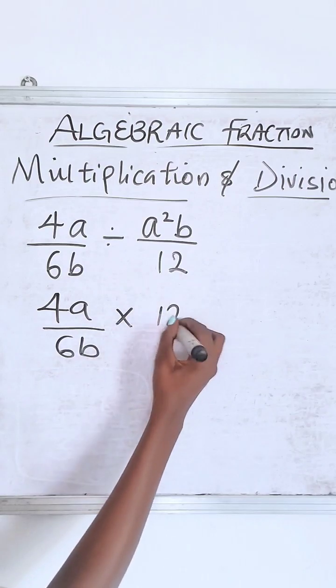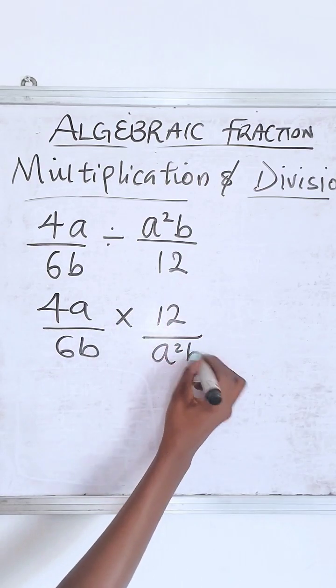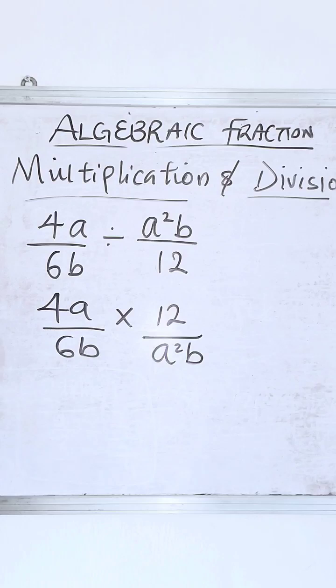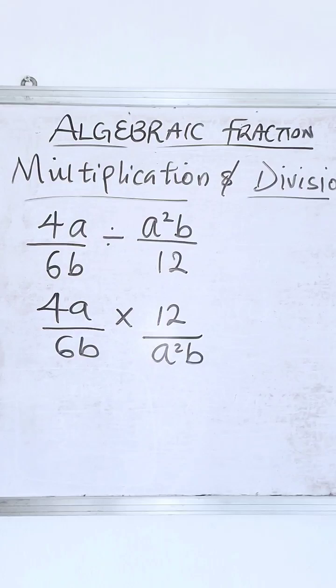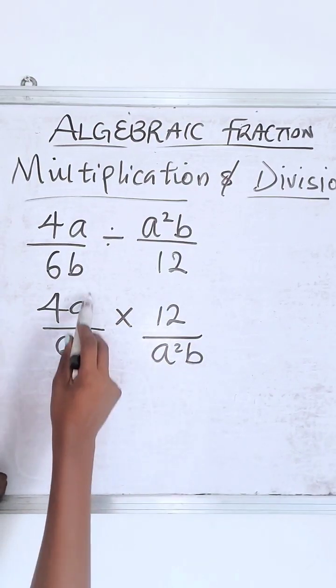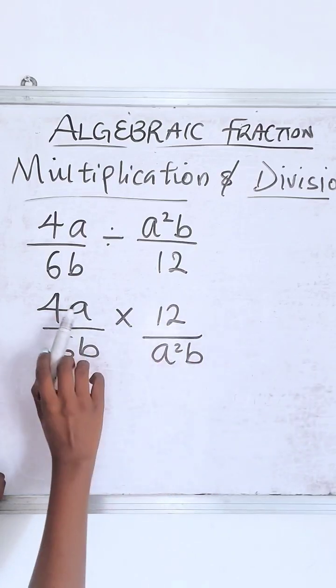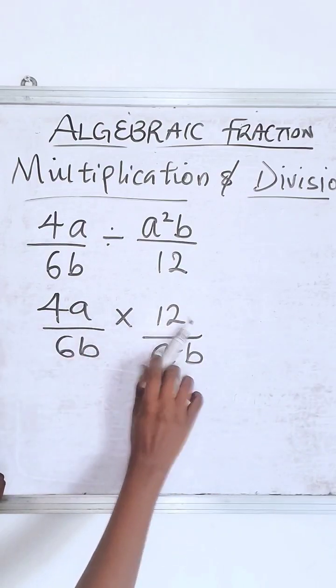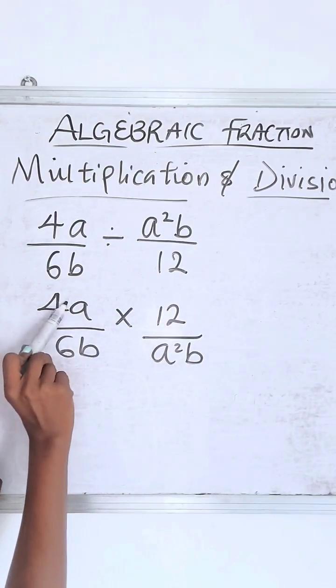Times you have 12, now a²b. Okay, now there are two ways you can move further. You choose whatever works for you and then we go from there. So the first person can decide to just start canceling out. Remember, do not cancel numerators. No, you don't say 4 in 12, no no no. You only cancel numerator versus a denominator.